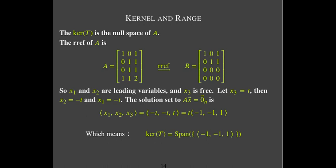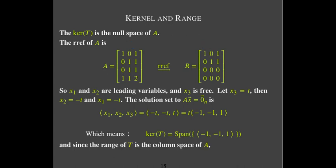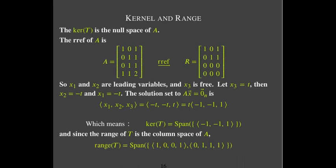What about the range? Remember, the range vectors go back to A and correspond to the leading columns in R. Columns one and two are leading, so those vectors form a basis for the column space of A, which is the range of T. Those two vectors are my basis vectors for the range of T, or the column space of A — it's the same thing.